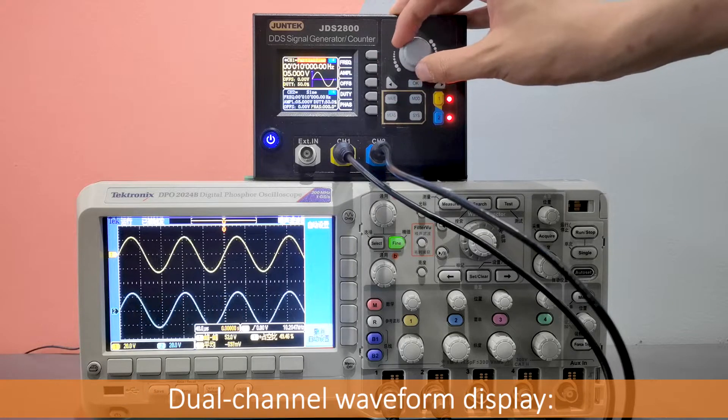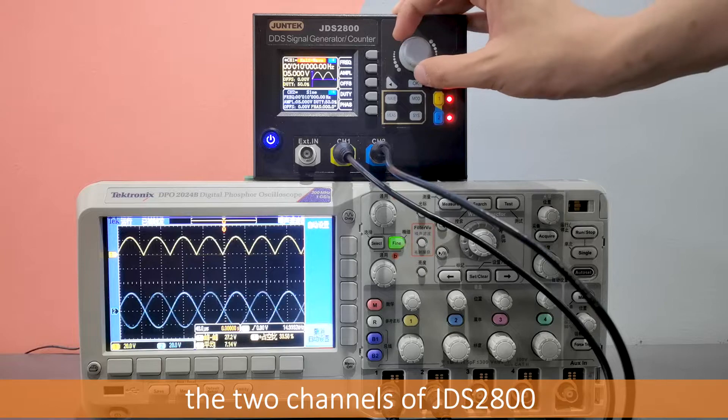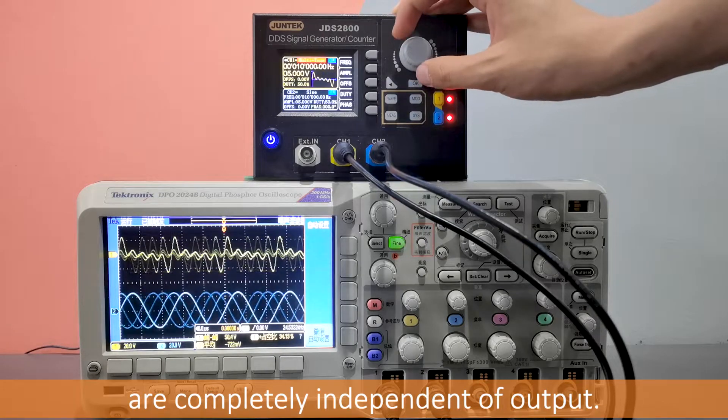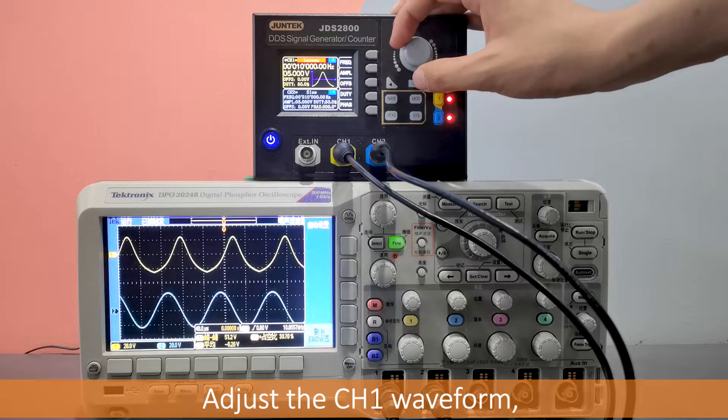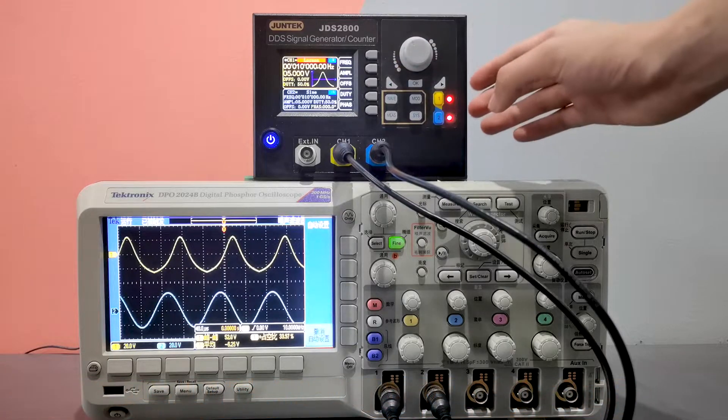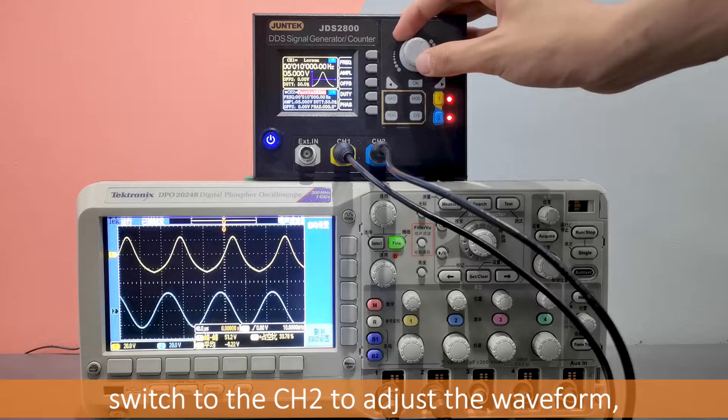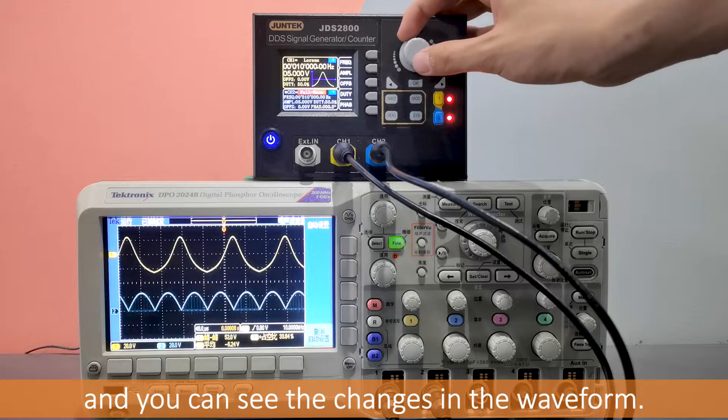Dual channel waveform display. The two channels of JDS2800 are completely independent of output. Adjust the CH1 waveform. Switch to the CH2 to adjust the waveform, and you can see the changes in the waveform.